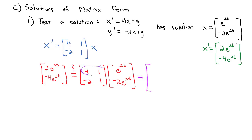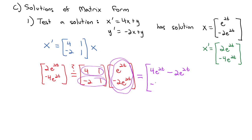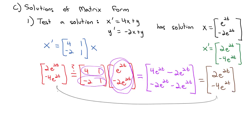Let's verify: on the right side, [4, 1; -2, 1] times [e^(2t); -2e^(2t)]. First row dot product: 4·e^(2t) + 1·(-2e^(2t)) = 4e^(2t) - 2e^(2t) = 2e^(2t). Second row: -2·e^(2t) + 1·(-2e^(2t)) = -2e^(2t) - 2e^(2t) = -4e^(2t). This matches our x' = [2e^(2t); -4e^(2t)], confirming our solution is accurate.